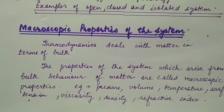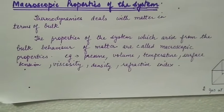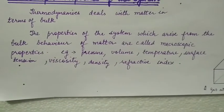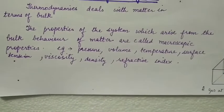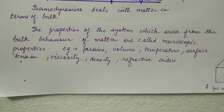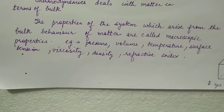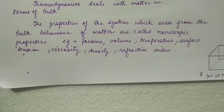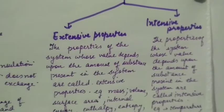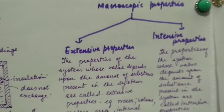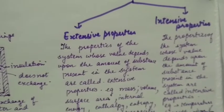Macroscopic properties of system, which arise from the bulk behavior of matter, are called macroscopic properties: pressure, volume, temperature, surface tension, viscosity, density, refractive index. Macroscopic properties we can divide in two categories: extensive properties or intensive properties.